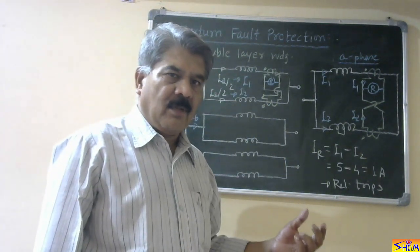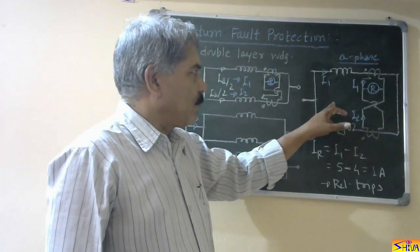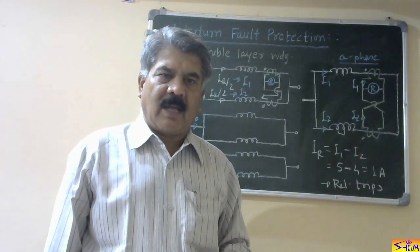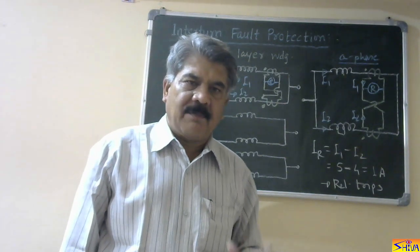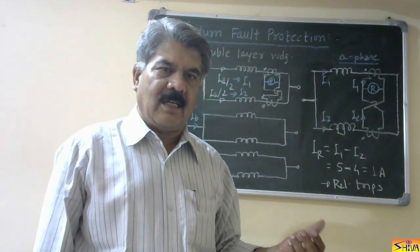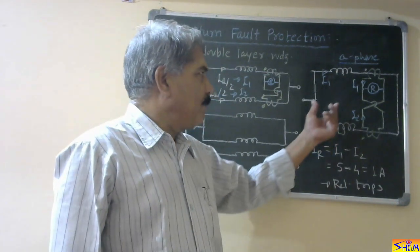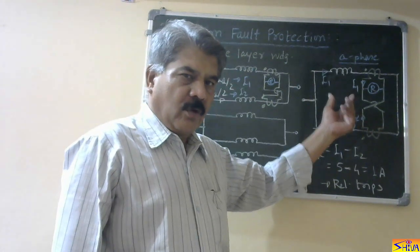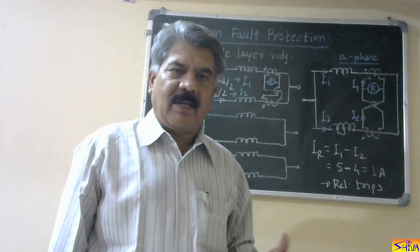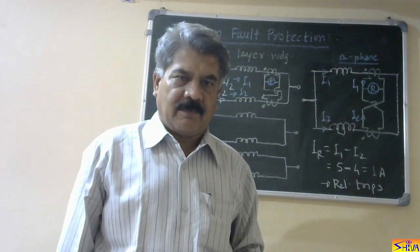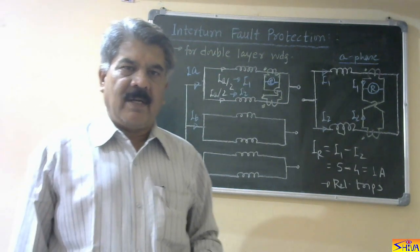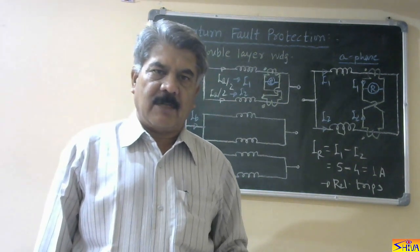For inter-turn faults, we need cross-differential protection or protection using a star open delta type transformer. The star open delta scheme detects inter-turn faults for both single-layer and double-layer winding. However, if we want to use cross-differential protection, it requires double-layer winding. For single-layer winding, the star open delta transformer scheme is used. This covers all inter-turn fault protection for the stator winding of the generator.